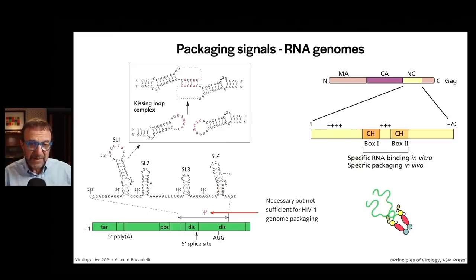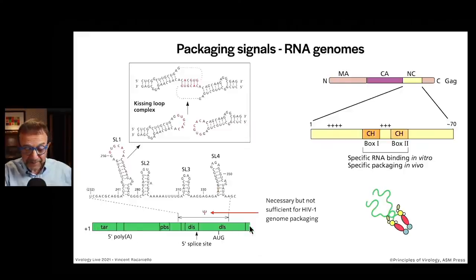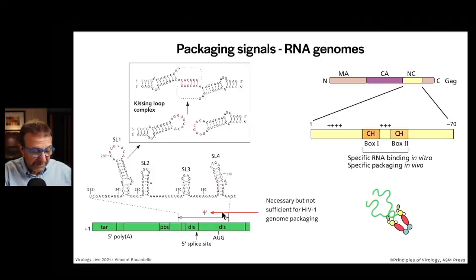RNA viruses also have packaging signals. They haven't been identified for all RNA viruses, but they have for many retroviruses. Here at the bottom in green is the left end of the HIV mRNA. There's the initiating AUG, the primer binding site where the tRNA would be bound, and here is the packaging sequence shown by the Greek letter PSI — necessary but not sufficient for genome packaging. If you take out this PSI sequence, you will not get packaging.